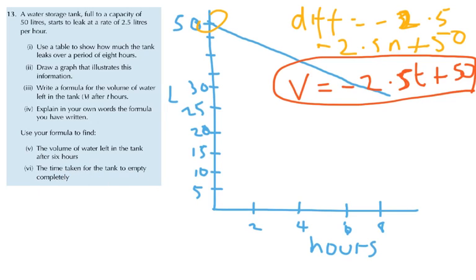And finally, the time taken for the tank to empty completely. How many litres are in the water when the tank is empty completely? It's 0 litres. So 0 is equal to minus 2.5T plus 50, and then you're trying to solve that equation here.